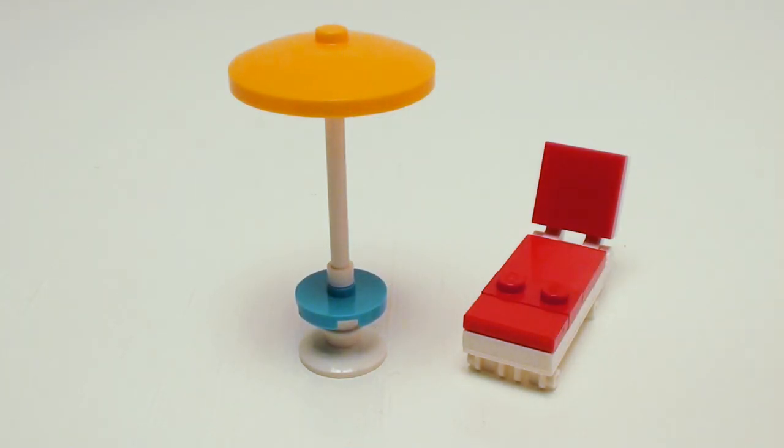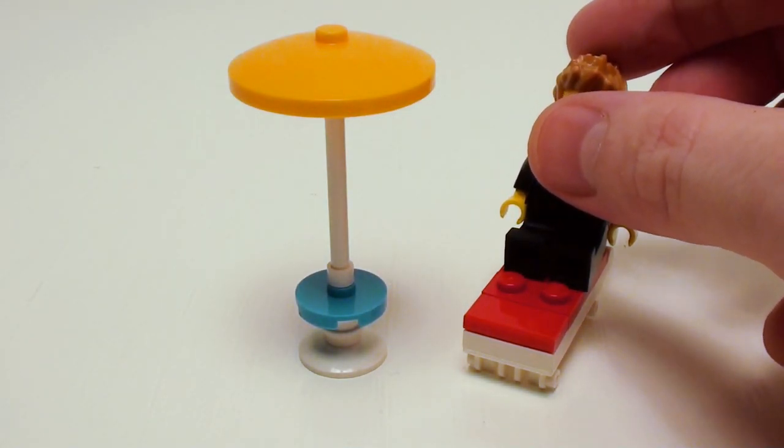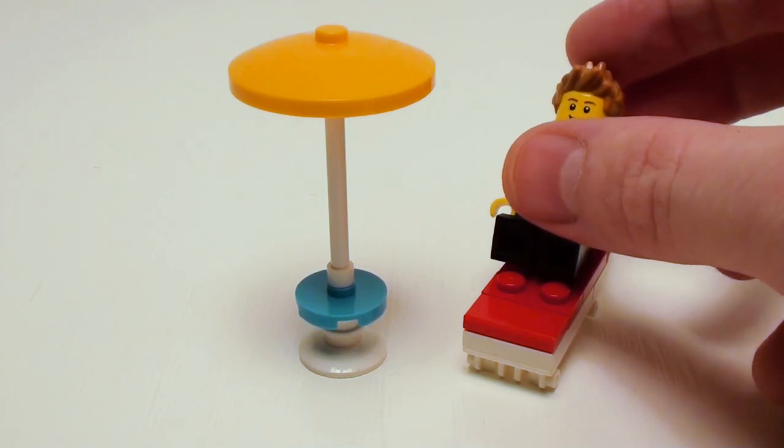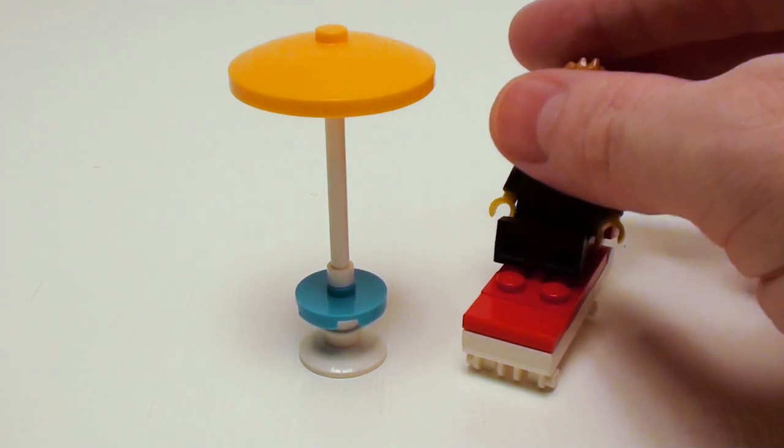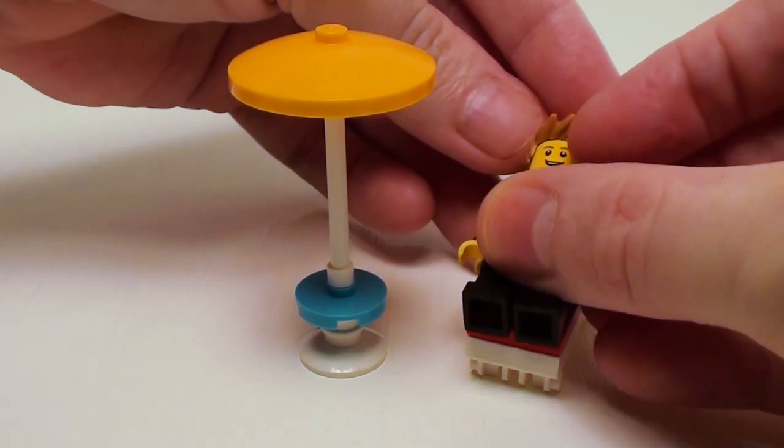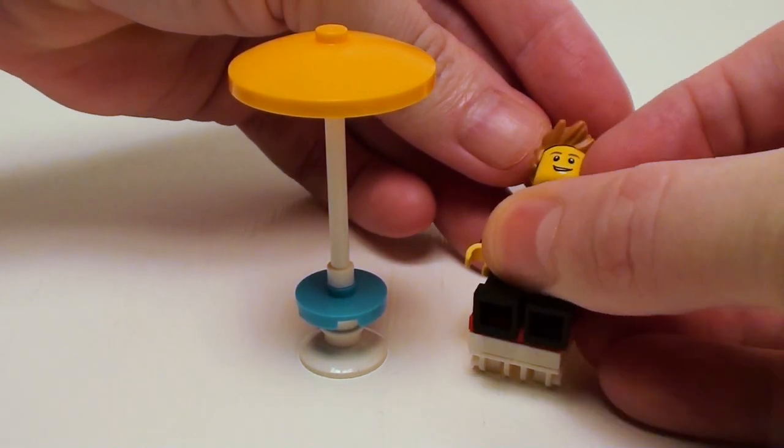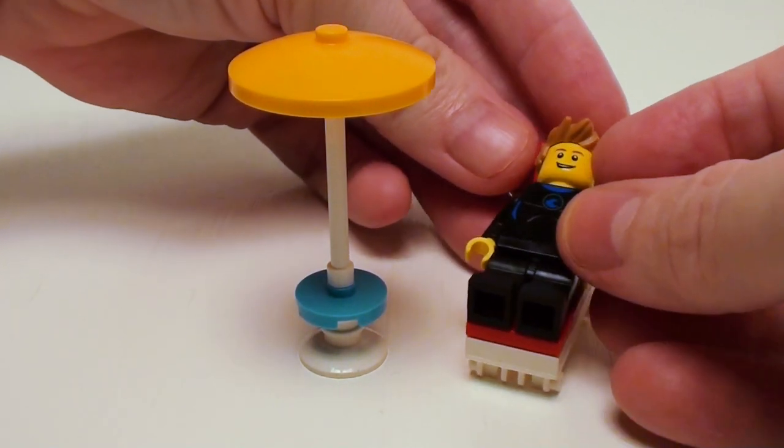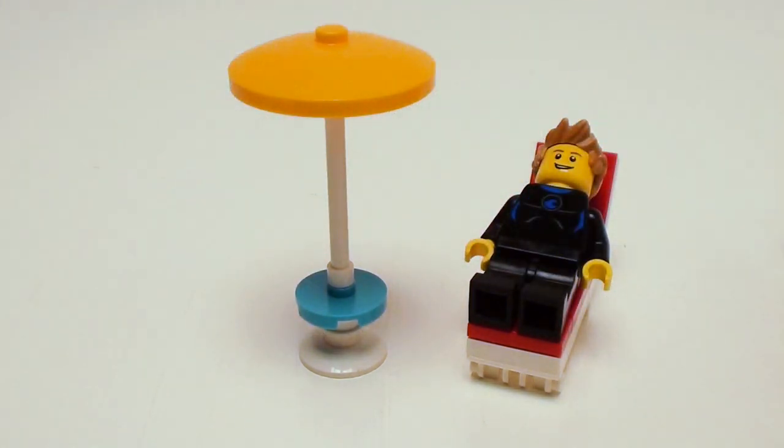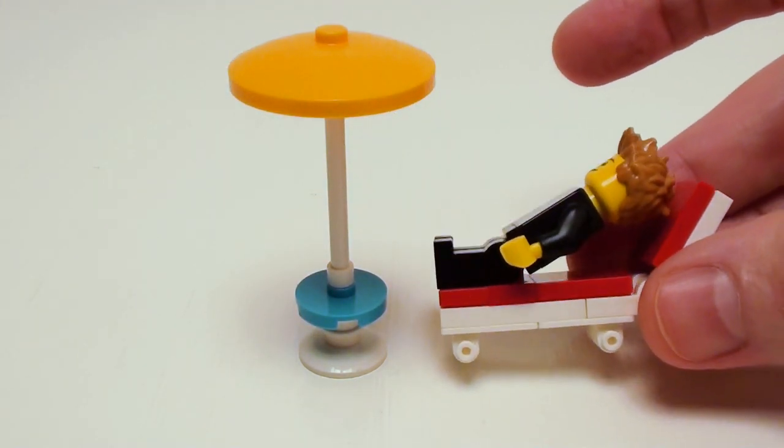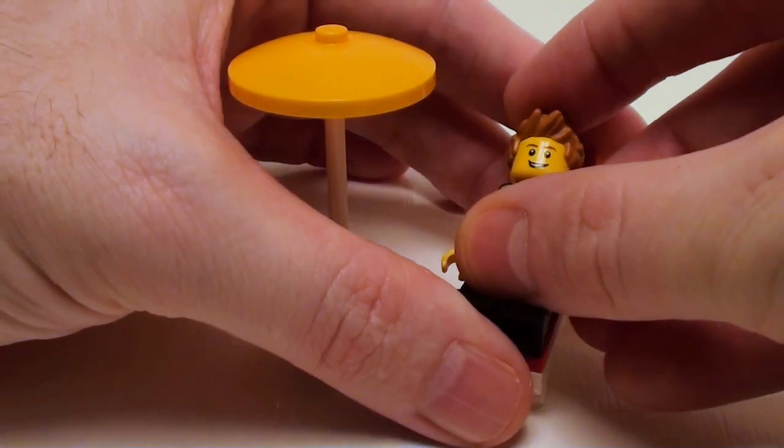The studs on the front of the chaise lounge are meant to attach the figure. So he can just sit back or he can also lay down as well. So Jay the surfer needs to grab some rays while he's wearing his wetsuit. As you can see though, he can sit nice on the chaise lounge. Pretty cool.